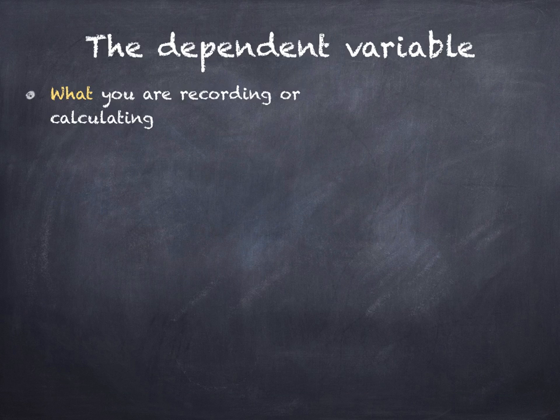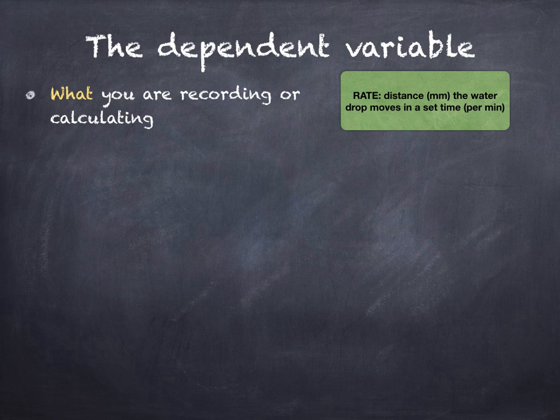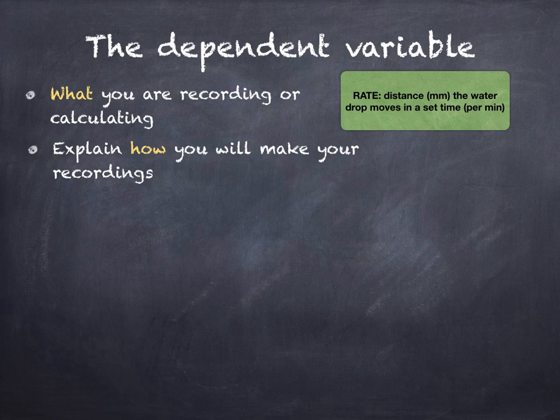The dependent variable is what you are recording or calculating. For example, in this experiment, you are calculating the rate. So this is the distance in millimeters the water drop moves in a set time, for example, per minute. You need to explain how you will make your recordings.